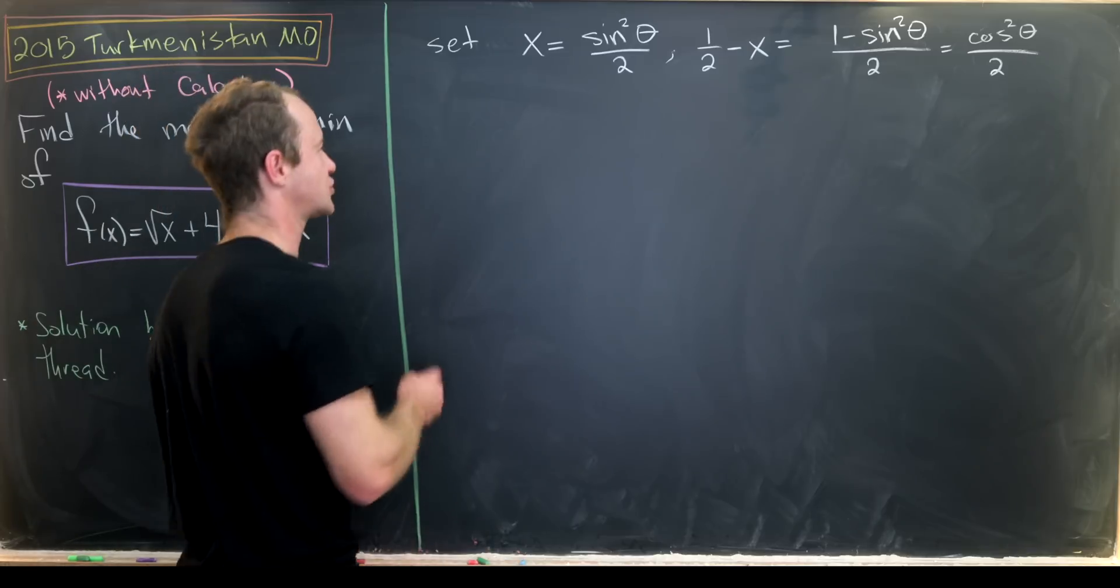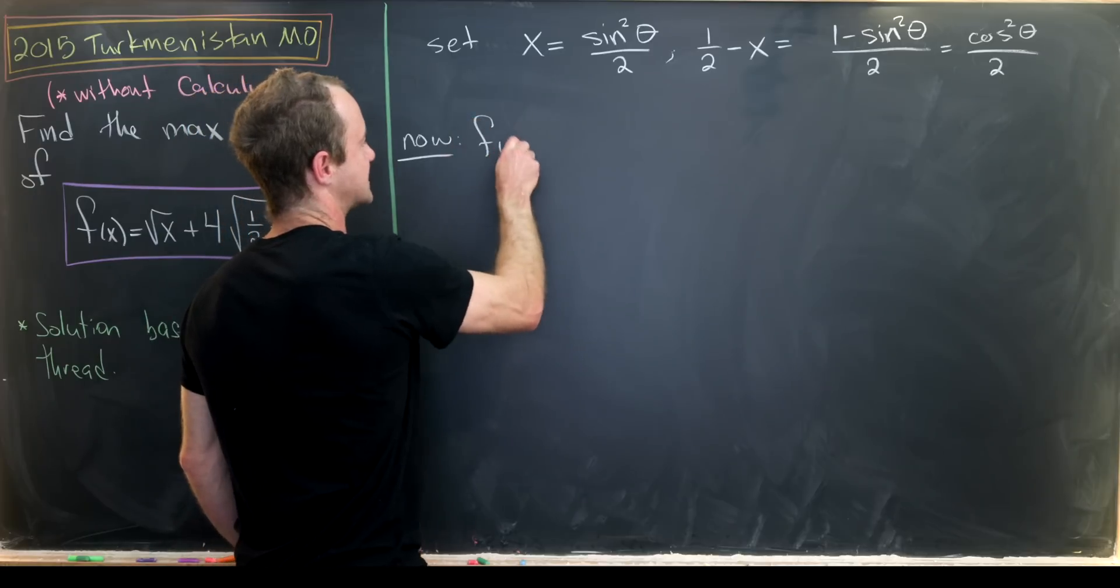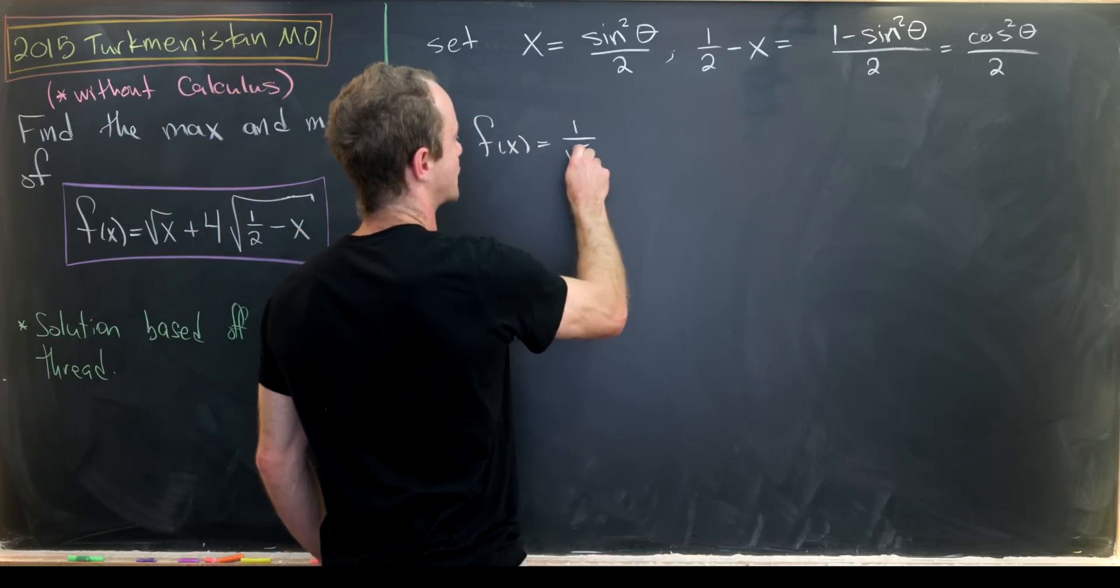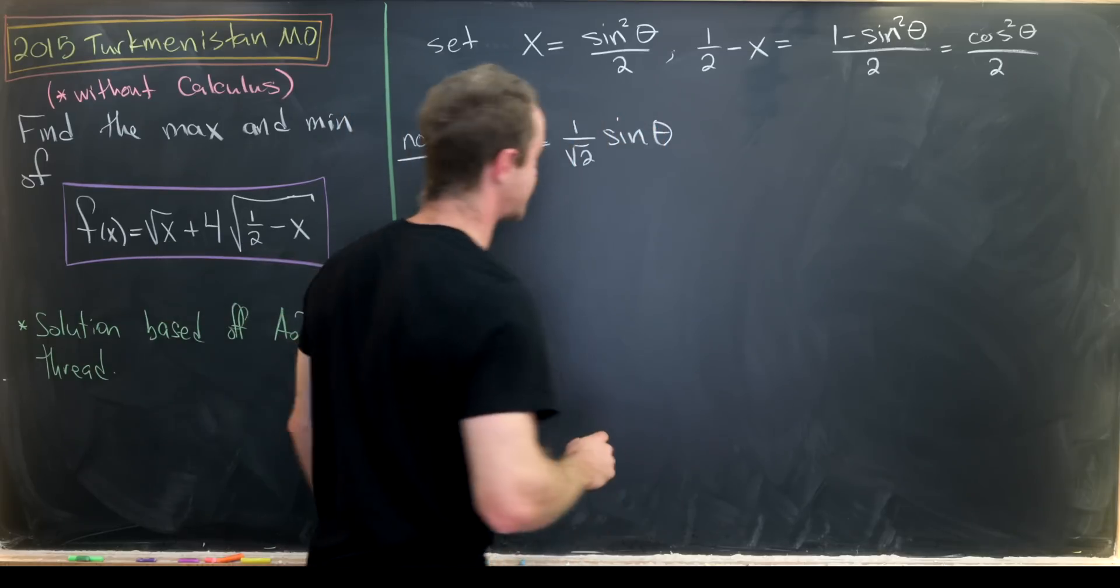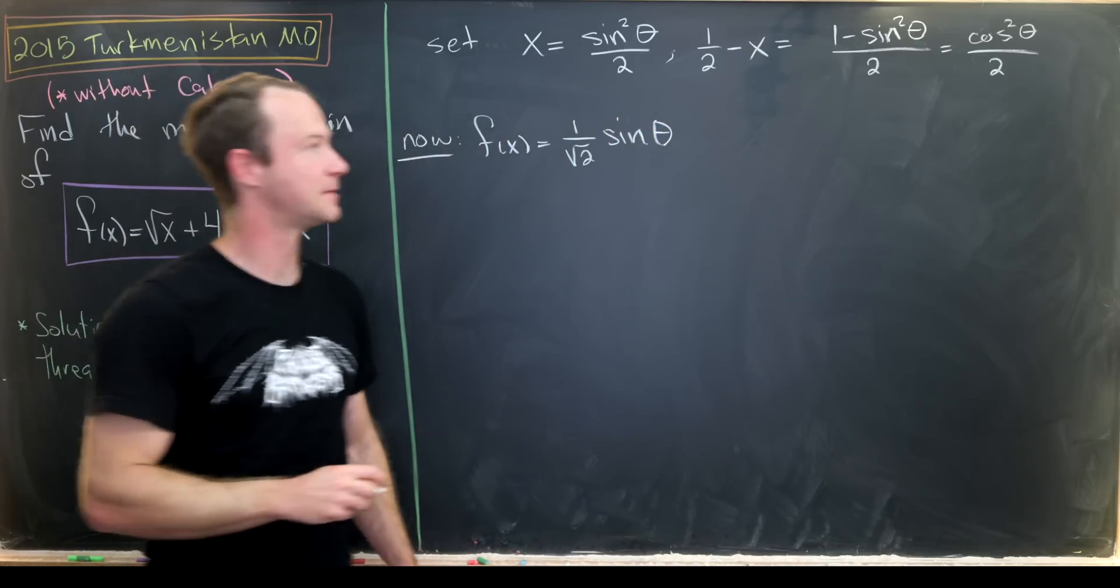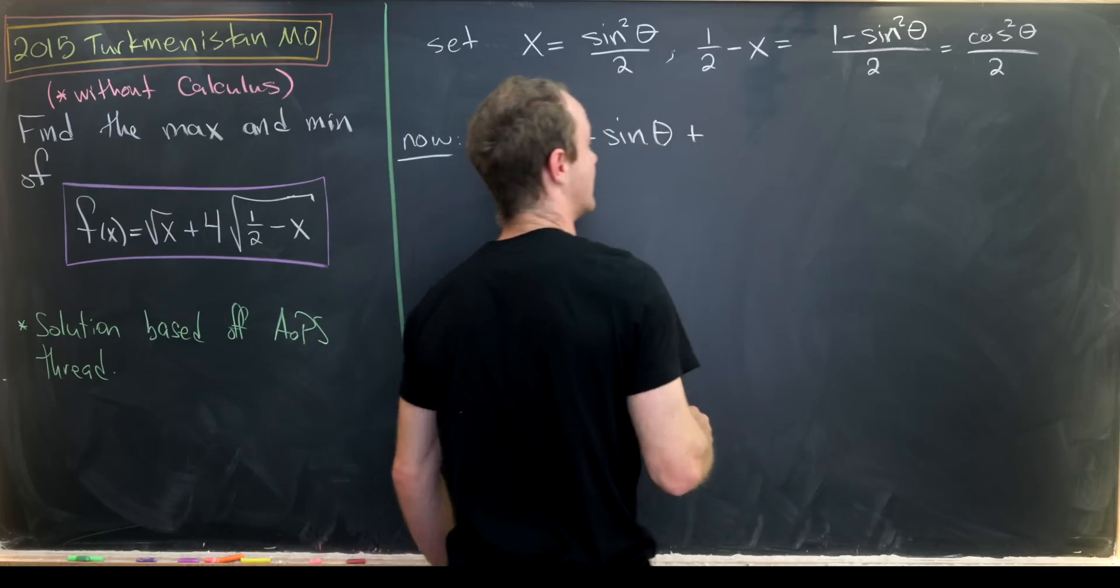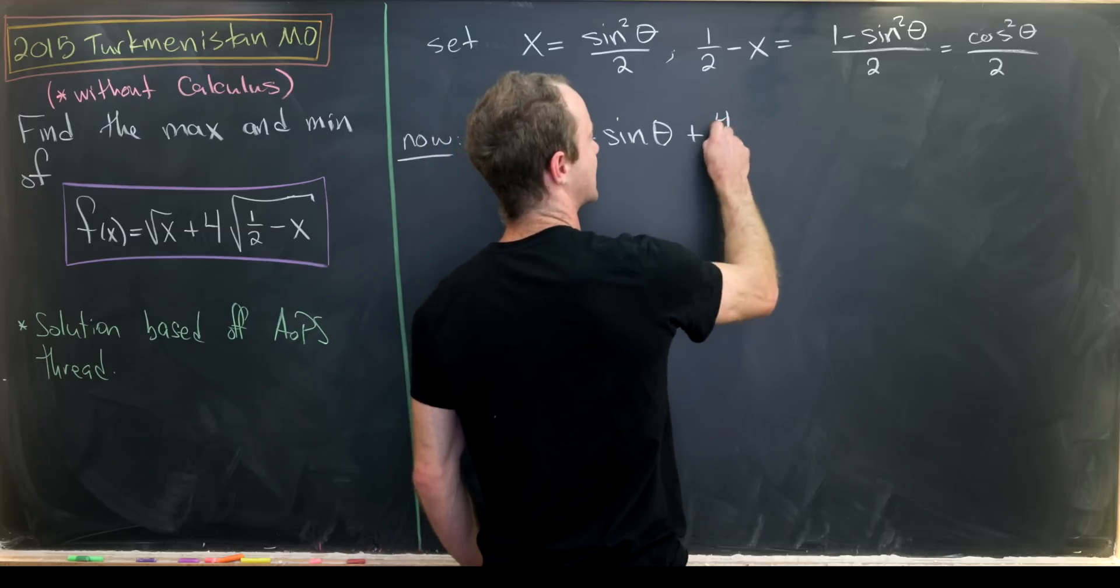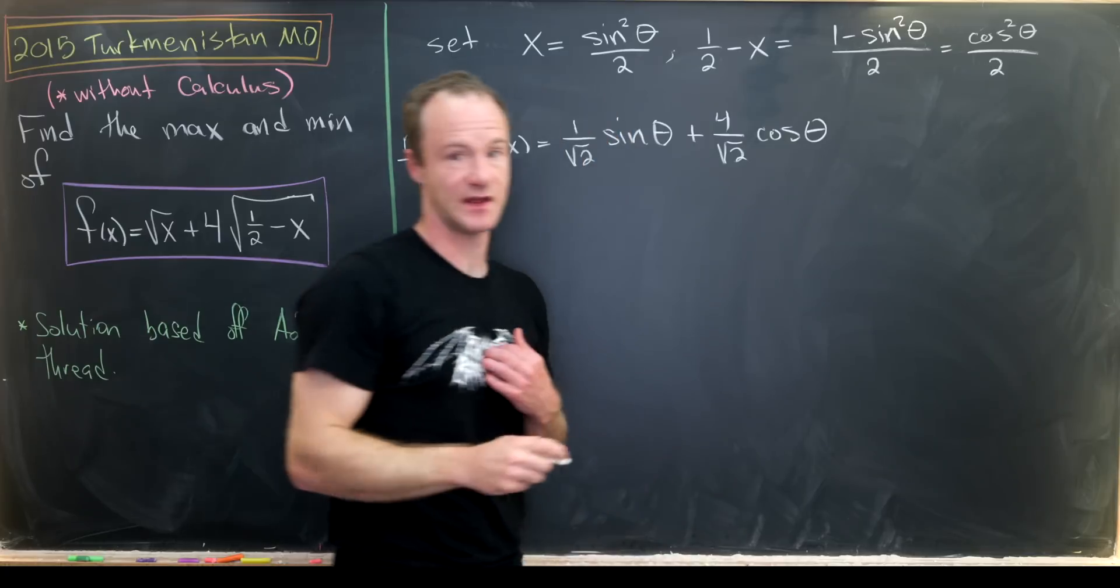So let's maybe see what our function looks like now. Now we have f of x is equal to 1 over the square root of 2 times the sine of theta. That's our square root of x term. And then we'll have 4 times the square root of this. So that's something like 4 over the square root of 2 times the cosine of theta.